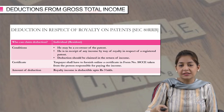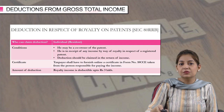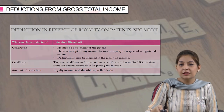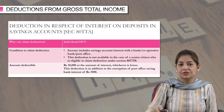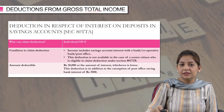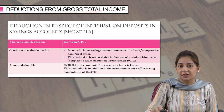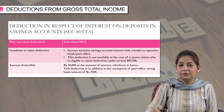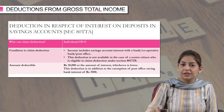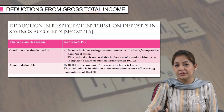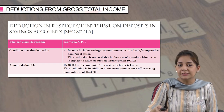So sections 80QQB and 80RRB both deal with royalty income. Next, we have section 80TTA. This is the deduction in respect of interest on deposits in savings accounts. We all have savings accounts and we all earn some interest income on our savings bank balances. We can claim the deduction for that interest income under section 80TTA.